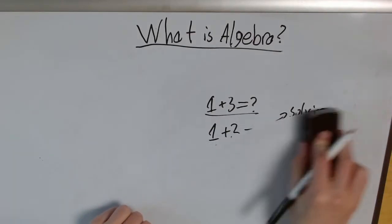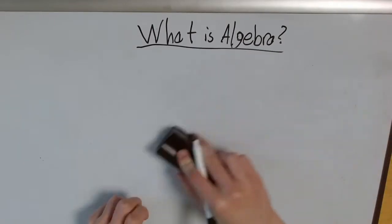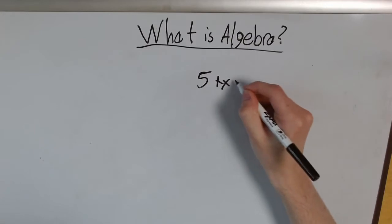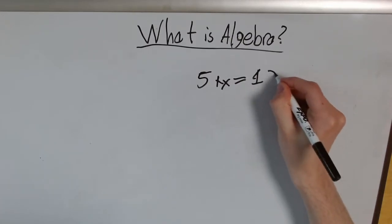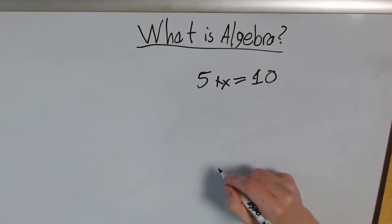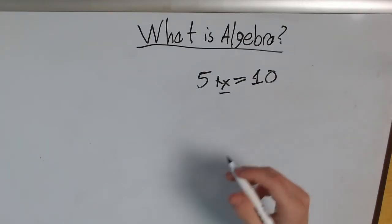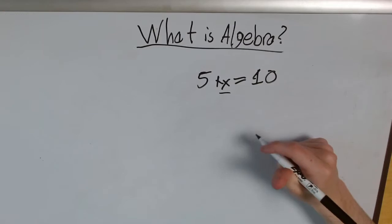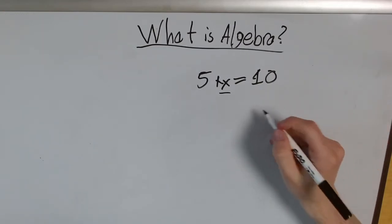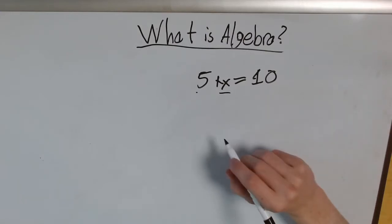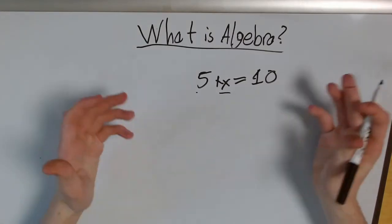Let's do another example. Say I had 5 plus x equals 10. You might say, okay, well this looks kind of scary. I've got this x in the middle right now. Before, I had 1 plus 3 equals x, and I could just do 1 plus 3 and I get x. But now I have 5 plus x. Well, how do I find the answer if I don't know what x is? I can't add an unknown to 5. That doesn't make any sense.